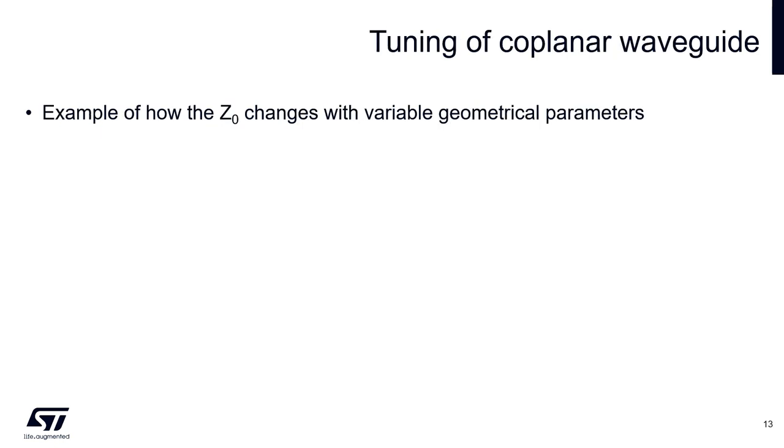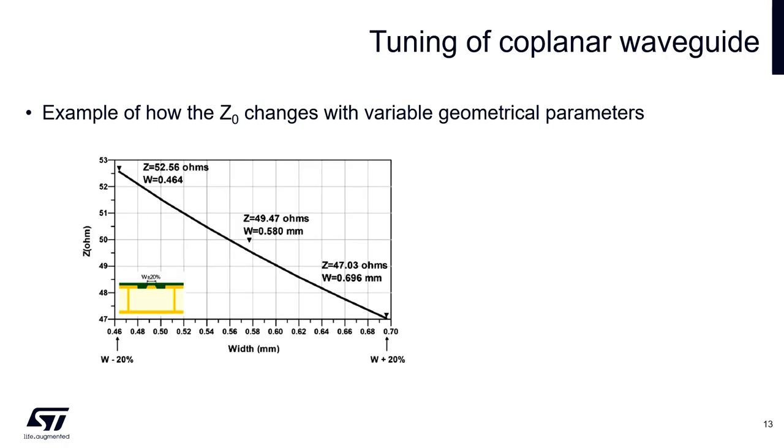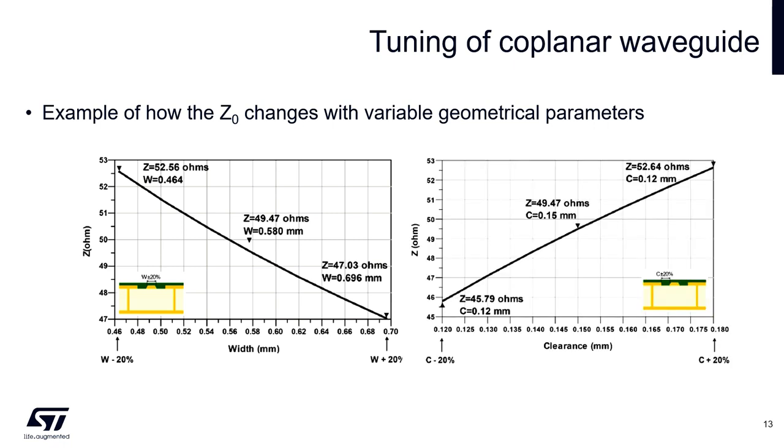Here we can see some examples about how the characteristic impedance of a coplanar waveguide depends on geometric parameters. If the width of the main trace is narrower, then the characteristic impedance is higher, and vice versa. In the next figure we can see that the narrower gap between the trace and the ground plane sets a lower characteristic impedance, and vice versa.